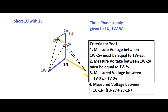The criteria to be fulfilled for vector group YND1 are as follows: Number 1 — voltage between 1W and 2W must be equal to voltage between 1W and 2V. Number 2 — voltage between 1W and 2V must equal voltage between 1V and 2V. Number 3 — voltage between 1W and 2W must be greater than voltage between 1W and 2V. Number 4 — voltage between 1U and 1N must equal the sum of voltage between 1U and 2V plus voltage between 2V and 1N.